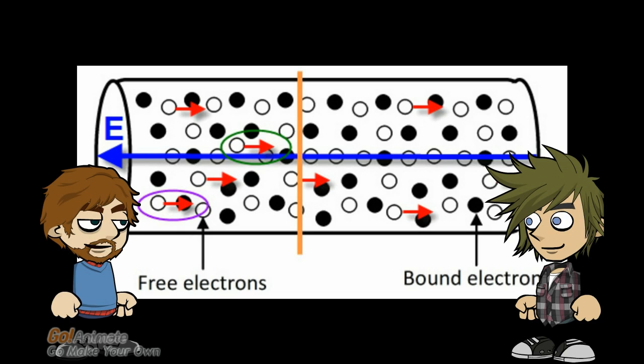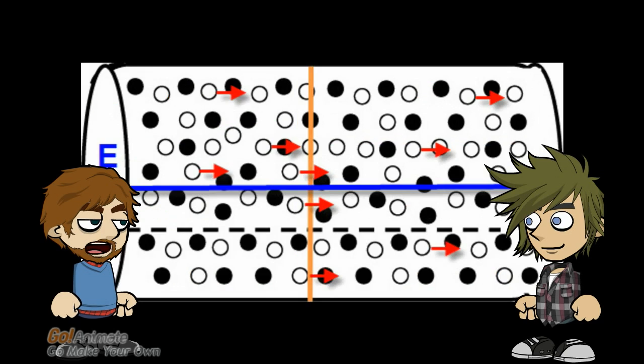Suppose we made the wire thicker. How would that affect what is going on? Here is what it might look like. The dotted line shows the old width of the wire. You can see that making the wire thicker increases the number of free electrons that can go past our orange line.